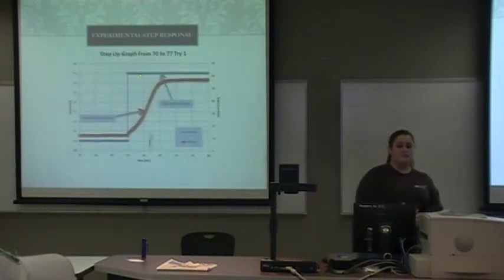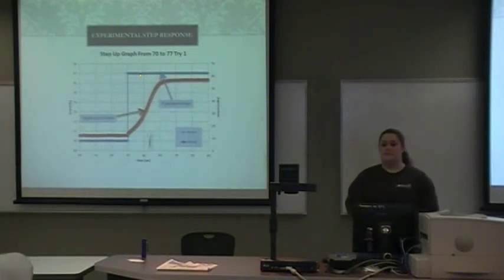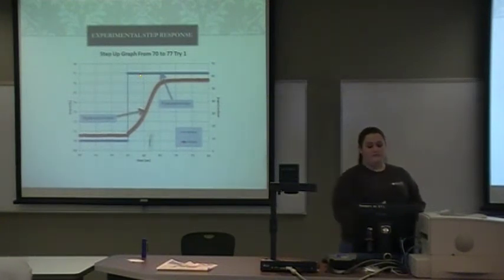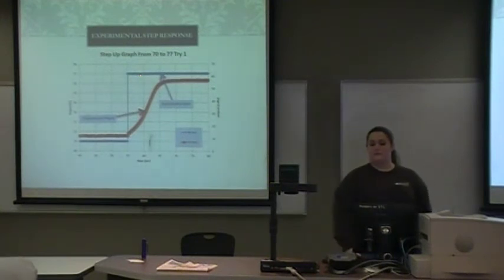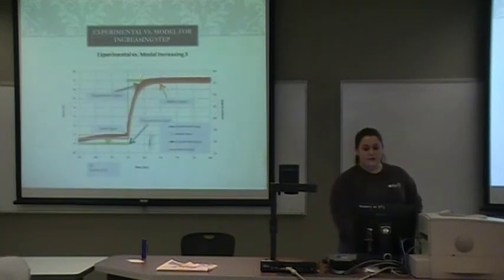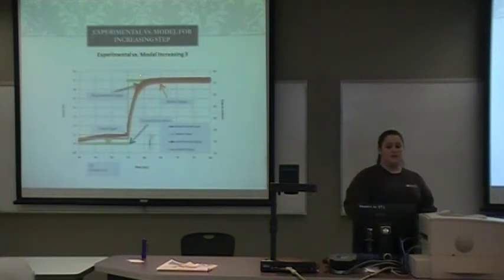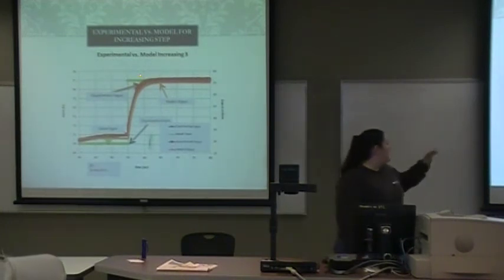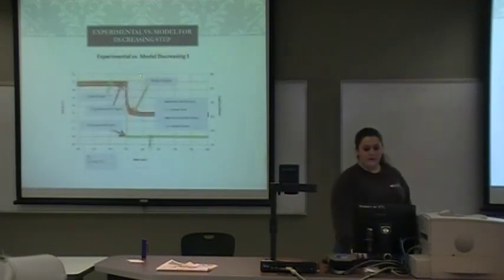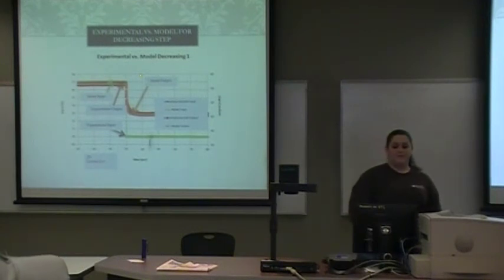This was one of our actual experiment results. The input was 70%, and then stepped up to 77% input. The output voltage before the step was about 70.8 volts. Then we fitted the model curve with the experimental curve — the model input and experimental output overlap, and you can see the step-down comparison as well.